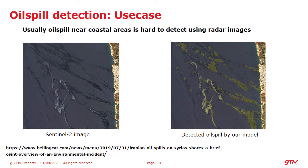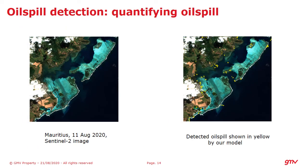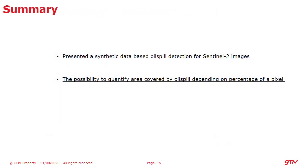As a first test case we use this method on an image in Syria, where we see that our algorithm can find oil spills near the coast with a high rate of success, as seen in the image on the right-hand side. Additionally, we use our algorithm to find zones affected by oil spill in Mauritius — the yellow spots on the right-hand side show the area detected by our algorithm, which corroborates well with news reports. In summary, we used a synthetic database approach for detecting oil spills in Sentinel-2 images, and there is also a possibility to quantify the amount of oil spill present in an area.